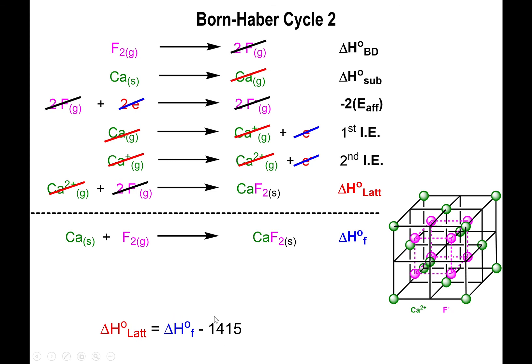The value happens to be negative 1220 kilojoules per mole. Once you subtract the two together, you end up finding out the lattice enthalpy is negative 2635 kilojoules per mole.